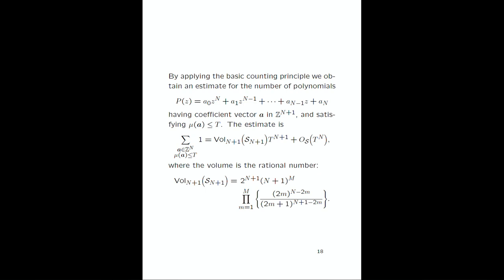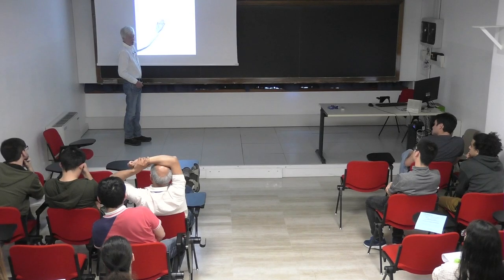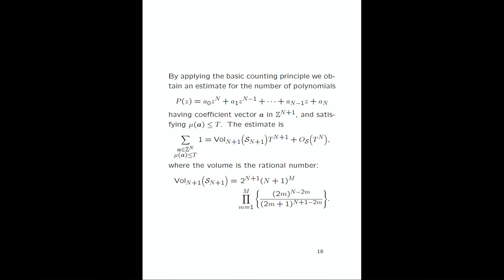Suppose we want to count polynomials of degree n with integer coefficients a_0, a_1, ..., a_n whose Mahler measure is at most t. By the basic counting principle — which holds in this case — this sum is approximately the leading volume term times t to a power, plus an error term that is big-O of one lower power of t. The volume is the rational number described earlier.